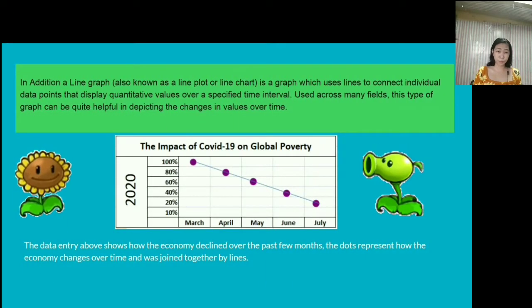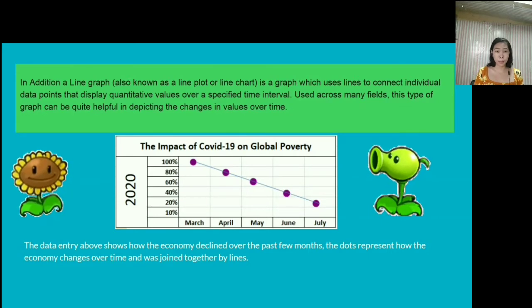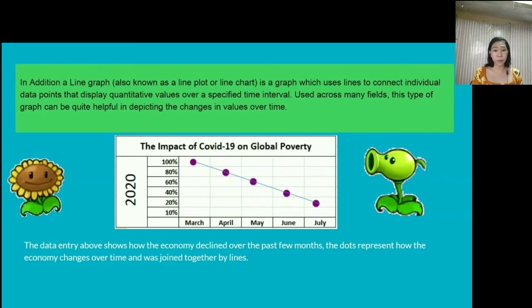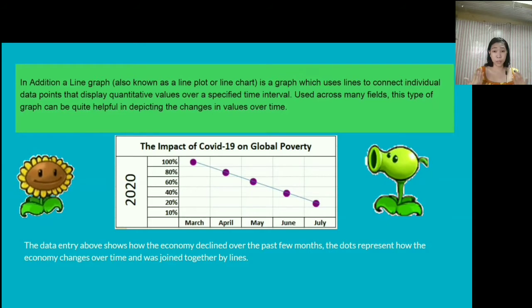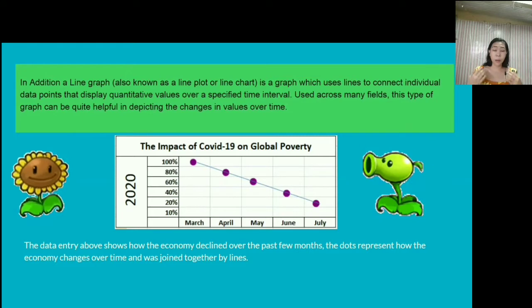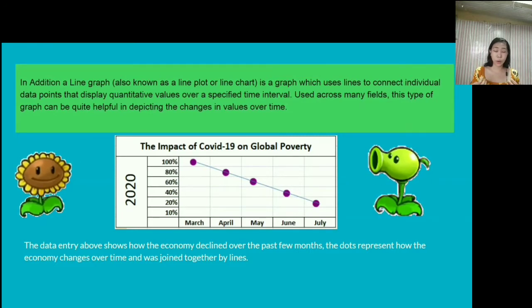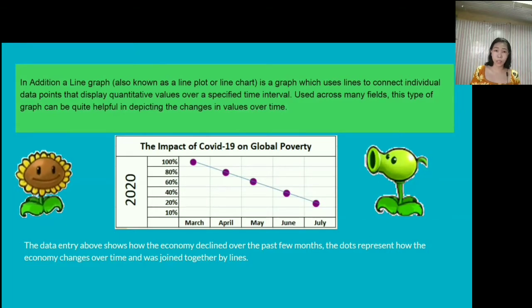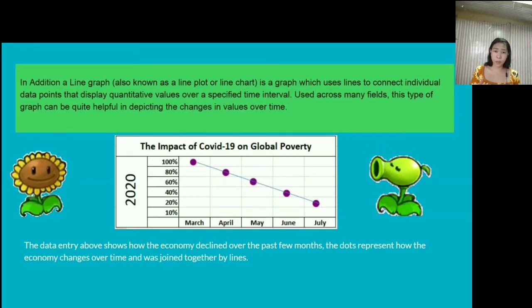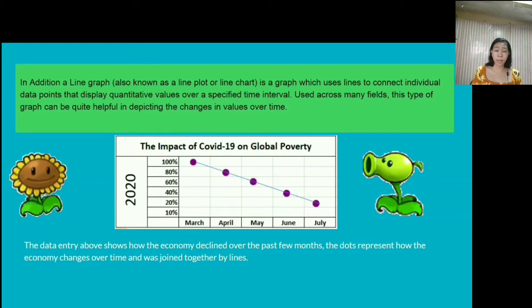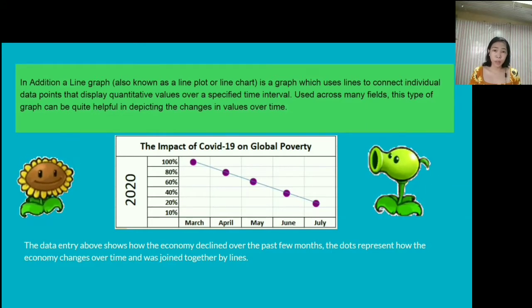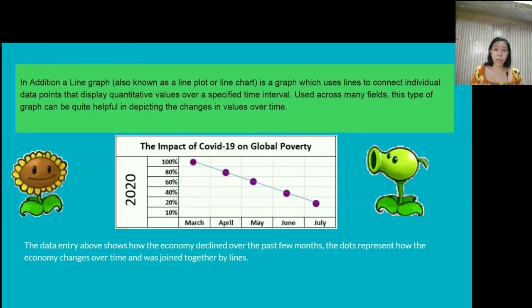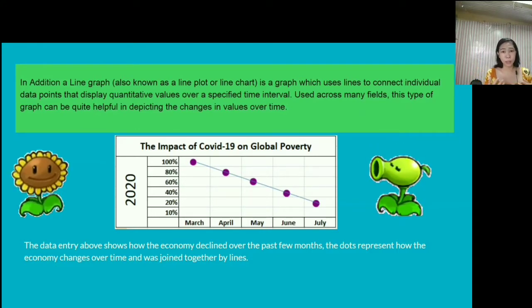So what is it used for? Since it helps us detect changes in quantitative values over a specified time interval, it is used across many fields, especially when presenting data that shows change over time, like stocks in business, population, the status of the economy, the number of affected people, etc. Also, this graph makes us interpret the data easier as it summarizes the data we have collected.